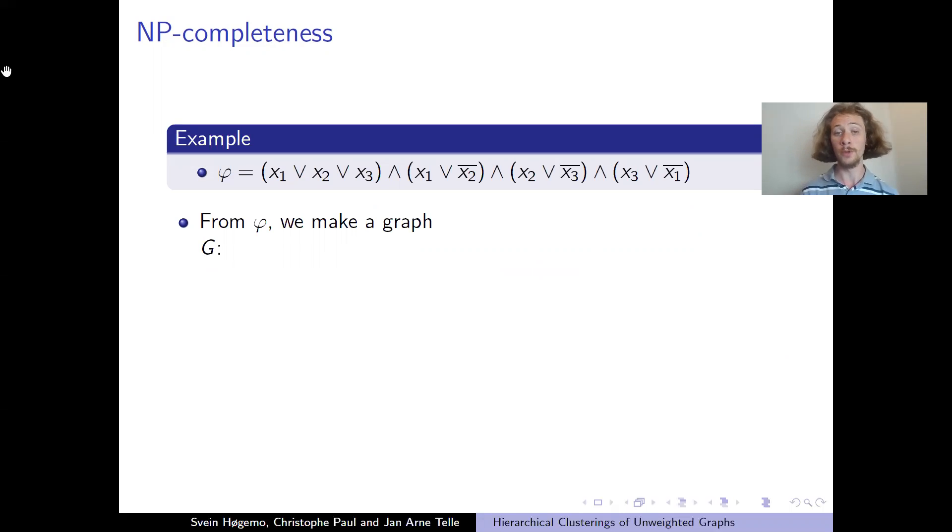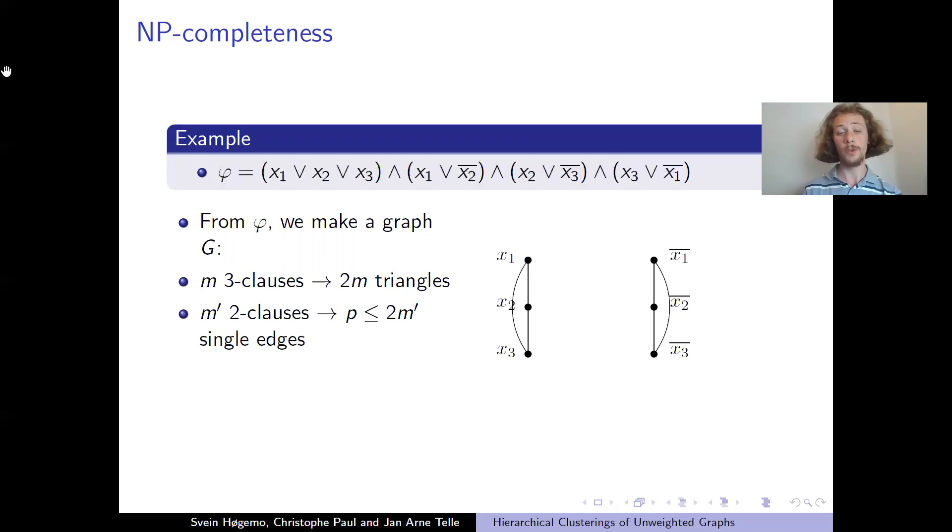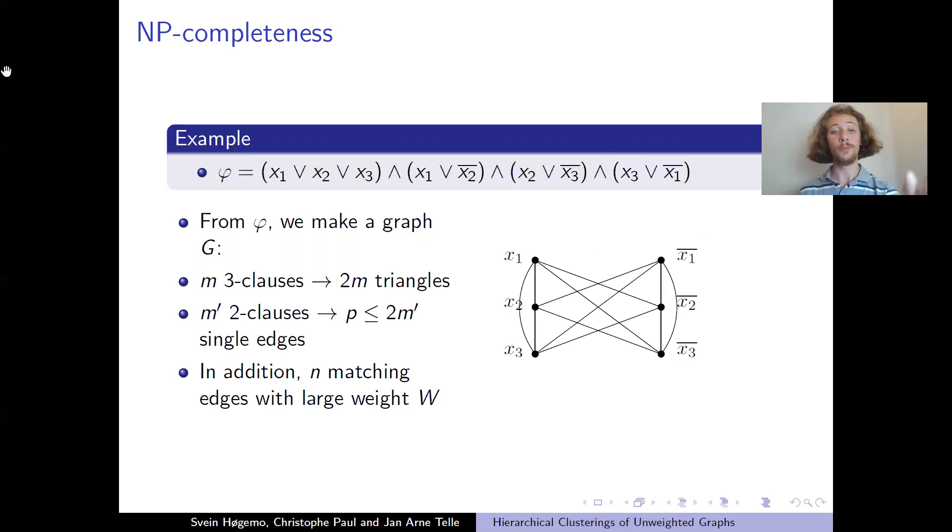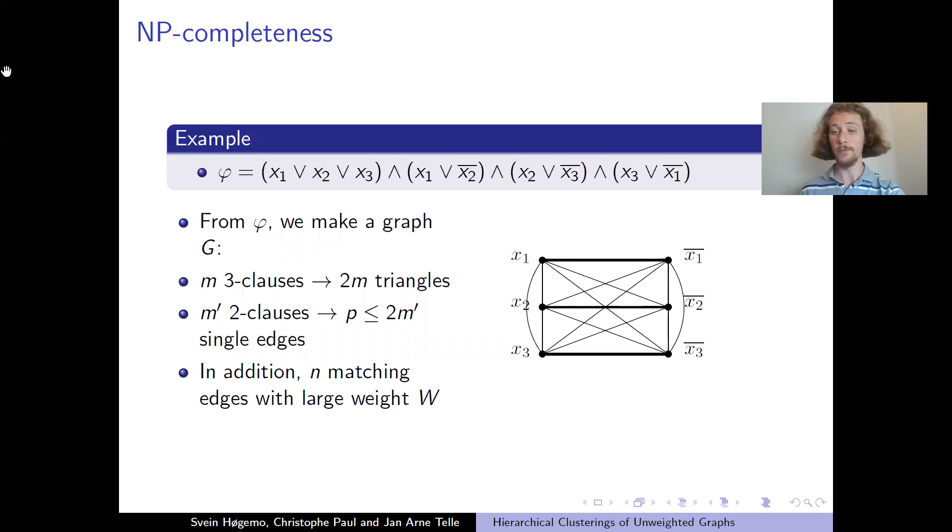To reduce to the hierarchical clustering problem, in which we want to maximize the cost, which we will also see later in this presentation, that this is what we focus on: maximizing the cost. From this example, we make a graph G, where for each 3-clause, we make two triangles, one for the clause and one for its opposite. And likewise, for each 2-clause, we make two single edges, like this. And for every pair of variables, x1, not x1, and so forth, we have an edge with a large weight, which is unspecified.